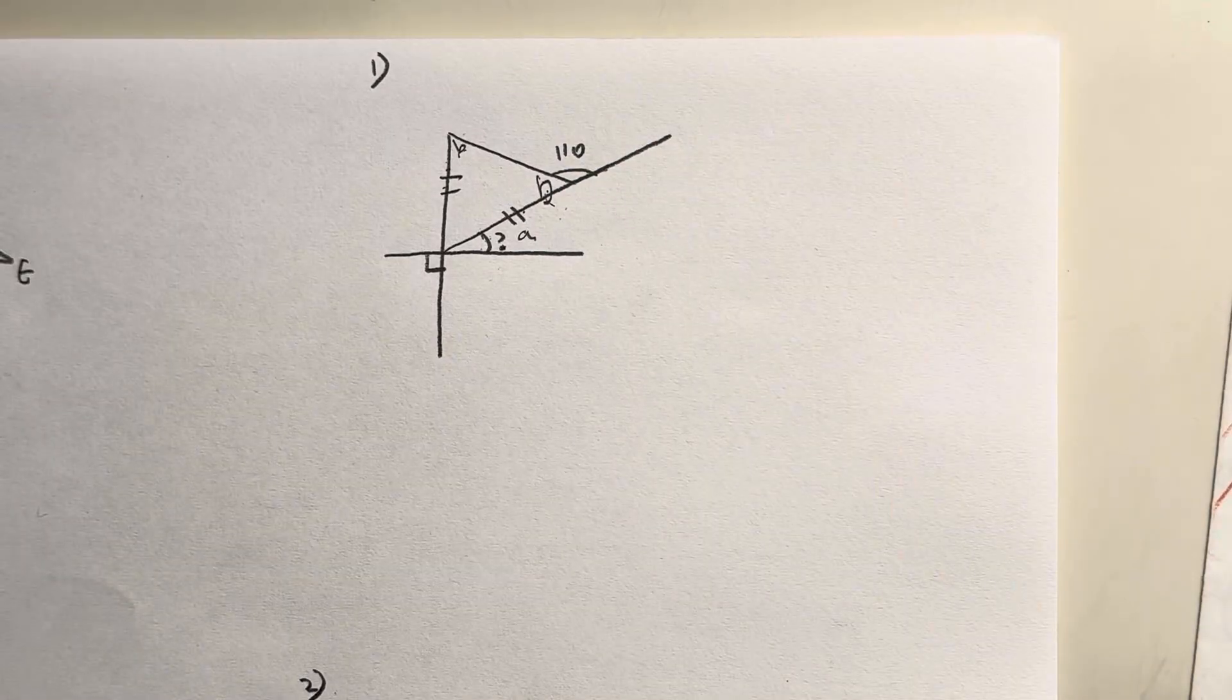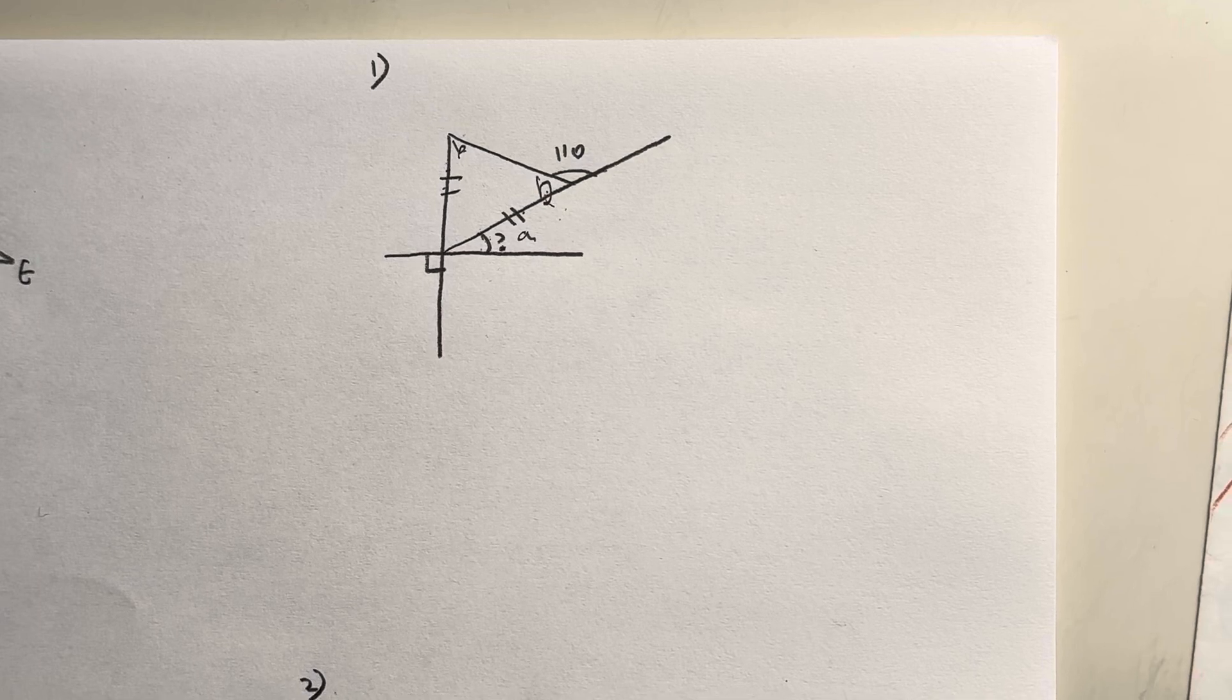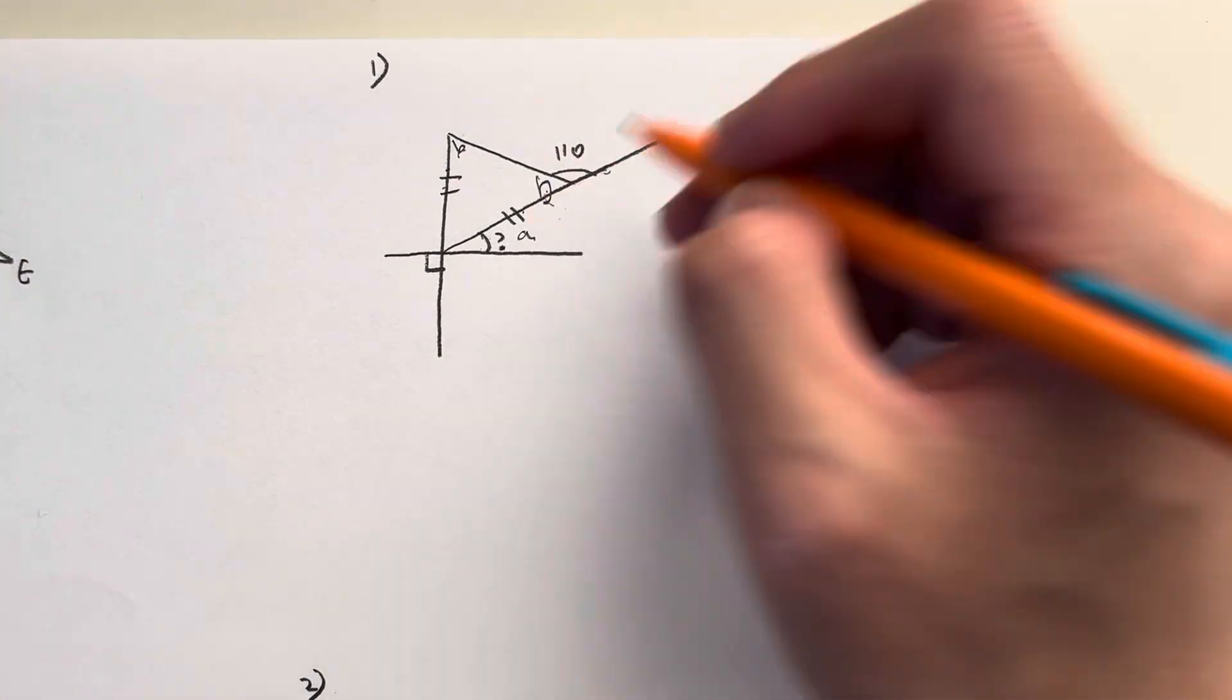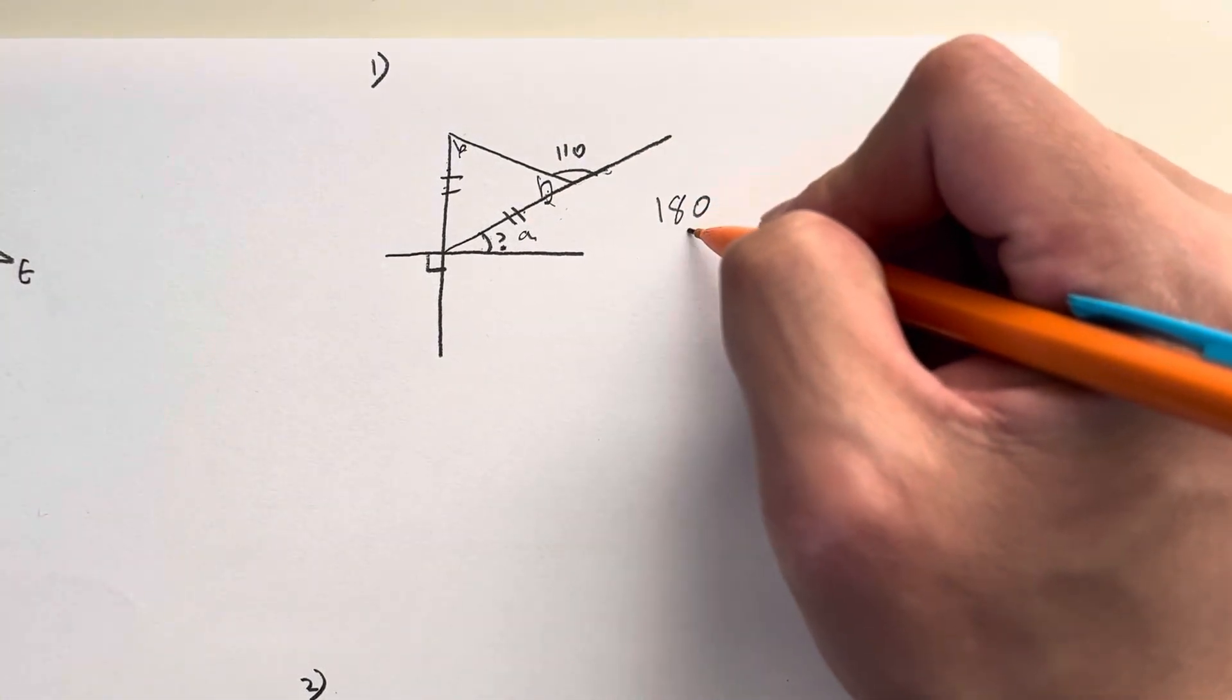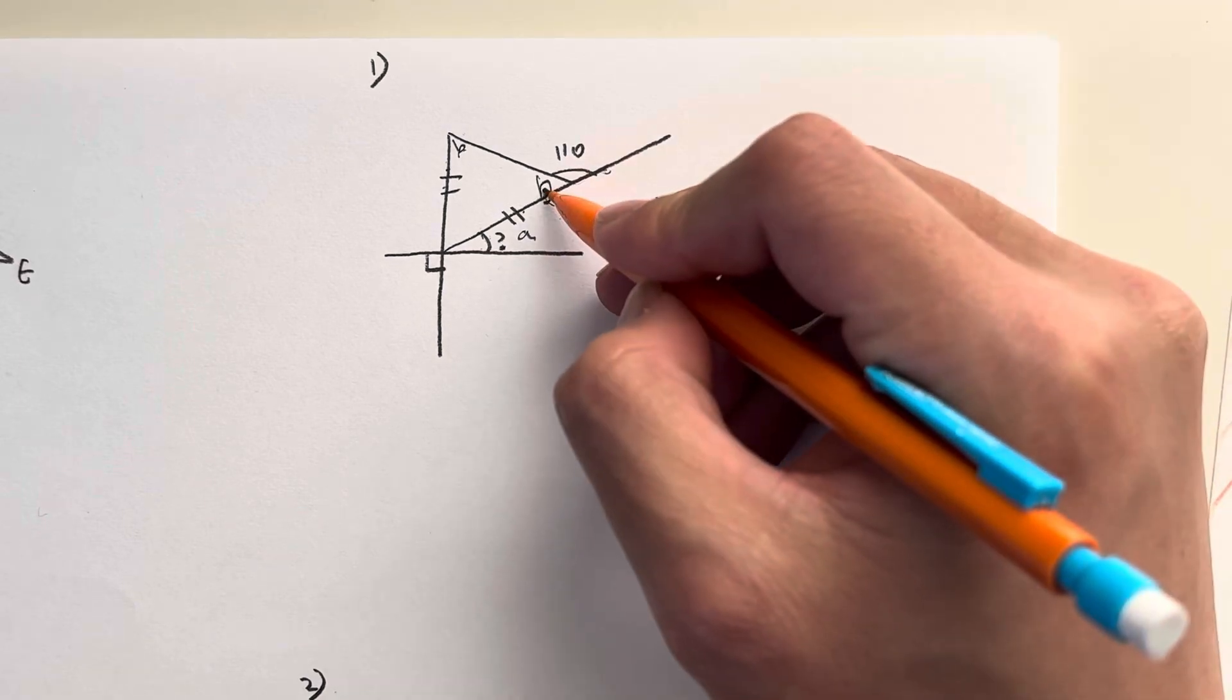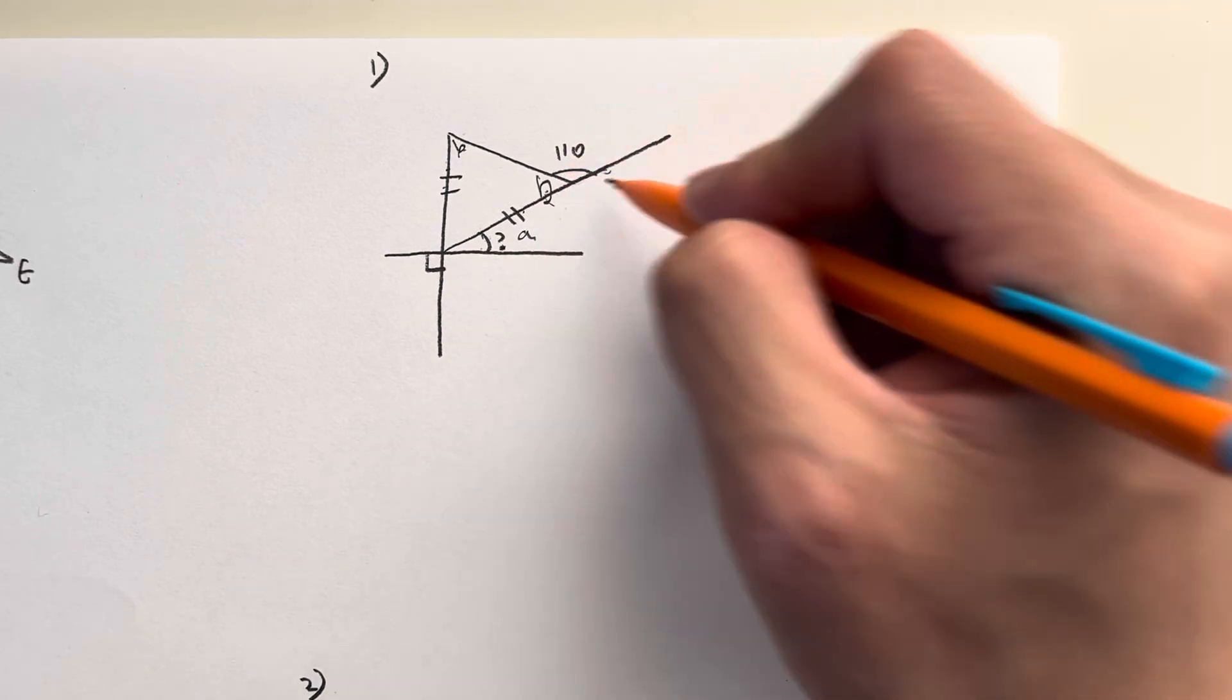So how do I get the value of B in this case? Basically what I'm going to do is I know that this forms a straight line. All straight lines you have to remember sum up to 180. So 180 is equal to my value B plus this angle right here 110.